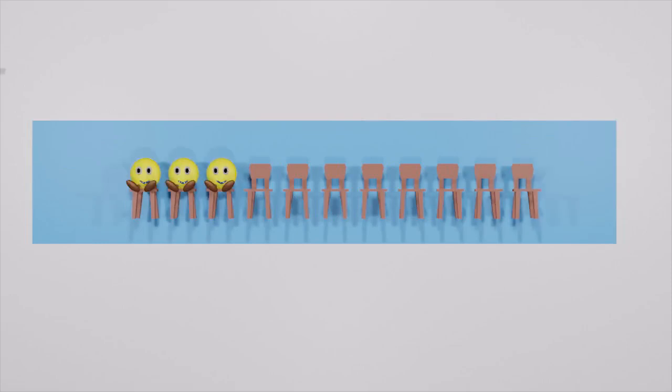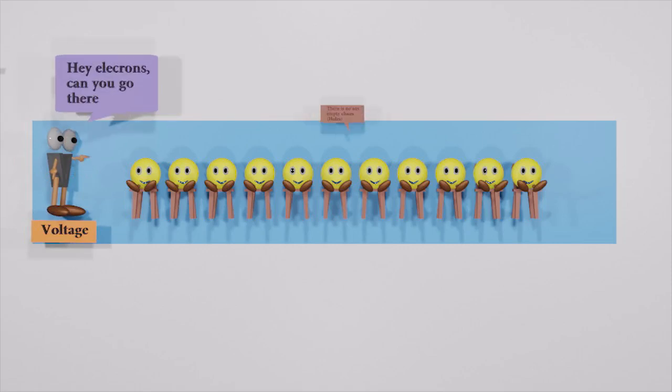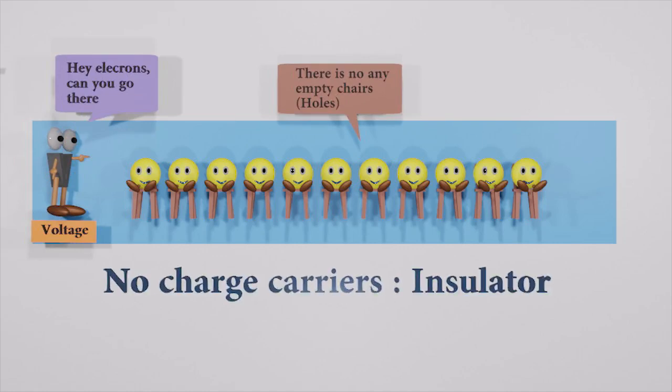This is a line of chairs. One electron can sit on one chair. One chair can only have one electron. Electrons always prefer to sit on chairs. Even if we apply a voltage, electrons have no free chairs to move. They all are in comfortable positions, so no charge carriers. That means it's like an insulator.